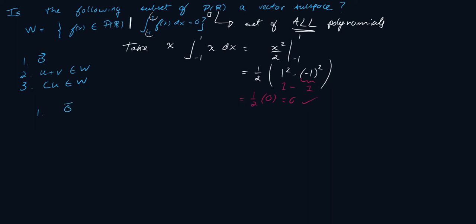So does the zero vector belong to W? In this case, what is the zero vector? The zero vector is actually the zero polynomial, and really the zero polynomial is just 0 belonging to the real numbers. So it's just the number 0.